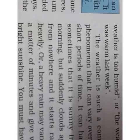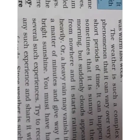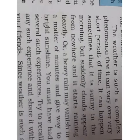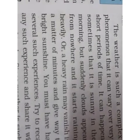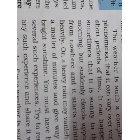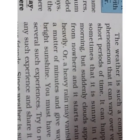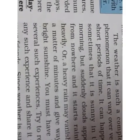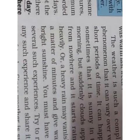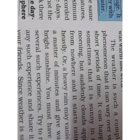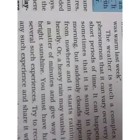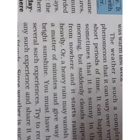Weather is such a complex phenomenon that it can vary over very short periods of time. Sometimes it is sunny in the morning but suddenly clouds appear from nowhere and it starts raining heavily. You cannot always judge the weather — it is so complex. This happens normally in the monsoon season: in the morning the sky is clear, the sun is shining, but suddenly in the afternoon clouds gather, and by evening it starts raining.